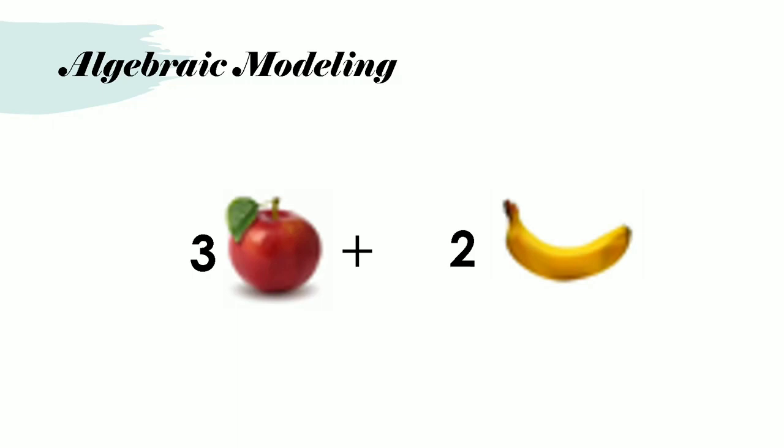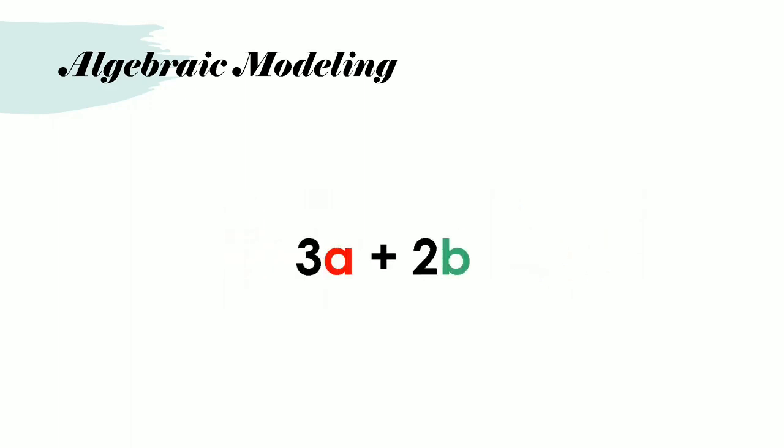But what if we were to replace the apple, the picture of an apple with a letter A and the picture of the banana with a letter B? Then we would have this: 3A plus 2B. This too is another form of algebraic modeling.